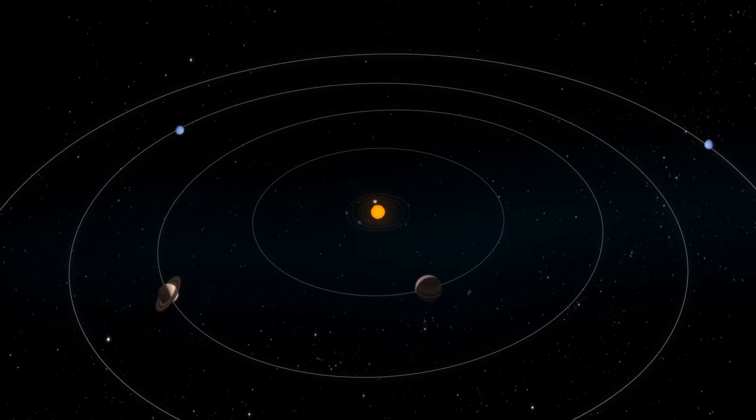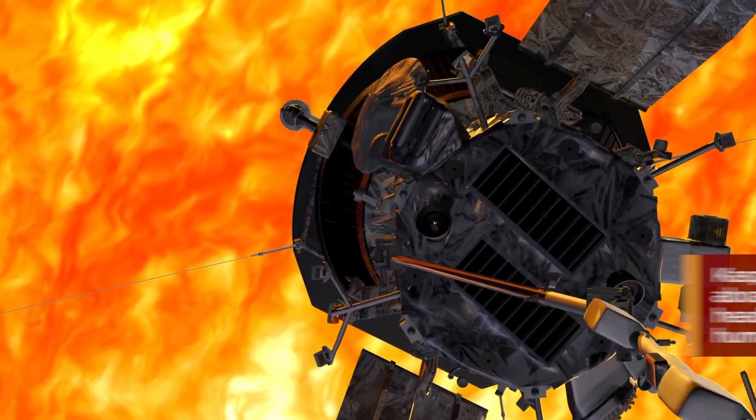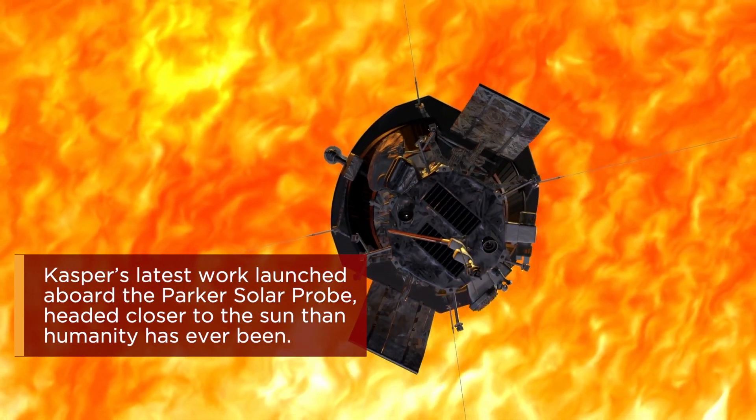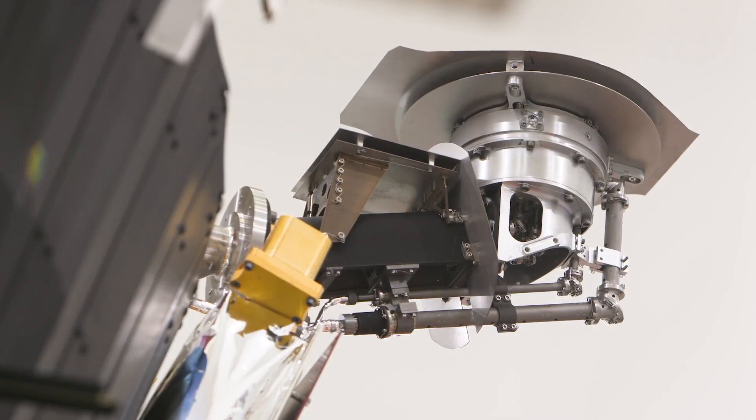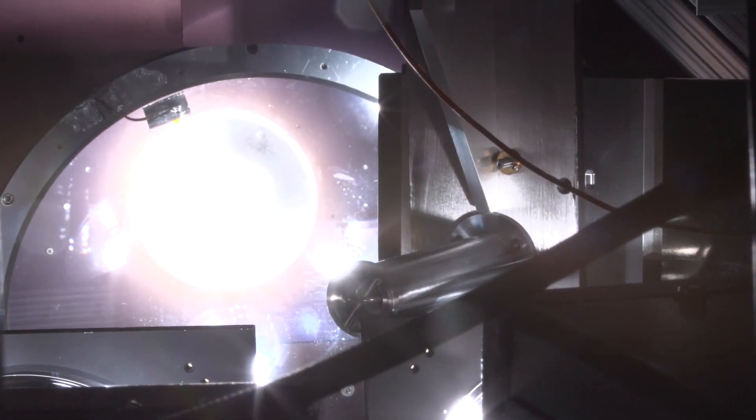I build instruments that go on spacecraft that we use to explore the solar system and better understand how the Sun affects life here on Earth. I developed an instrument called the Solar Probe Cup that points straight at the Sun during every encounter and scoops up samples of the Sun's atmosphere.